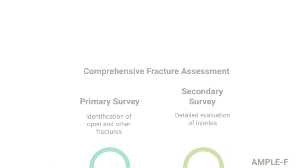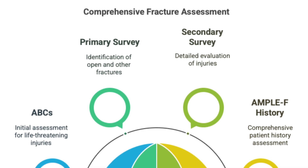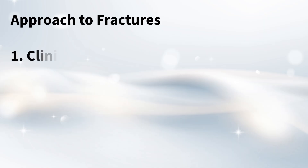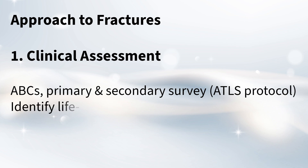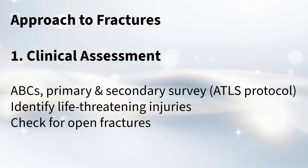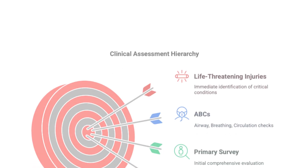So we have this fracture all described — now what's the immediate response when someone presents with a fracture? The very first thing is making sure there aren't any immediate life-threatening issues. The initial clinical assessment always starts with the ABCs: airway, breathing, and circulation. That's part of the larger ATLS protocol — Advanced Trauma Life Support — which helps doctors systematically address any critical problems first.